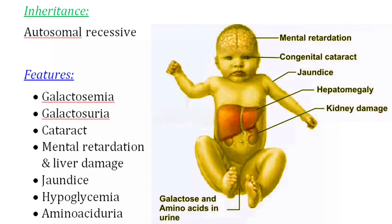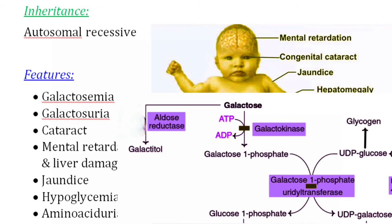Galactosuria — galactose is excreted in the urine. Cataract is formed because accumulated galactose is converted into galactitol, its alcohol form, by the enzyme aldose reductase. Galactitol is osmotically active and cannot escape from the lens. Due to its osmotic effect, it damages the lens and causes cataract.